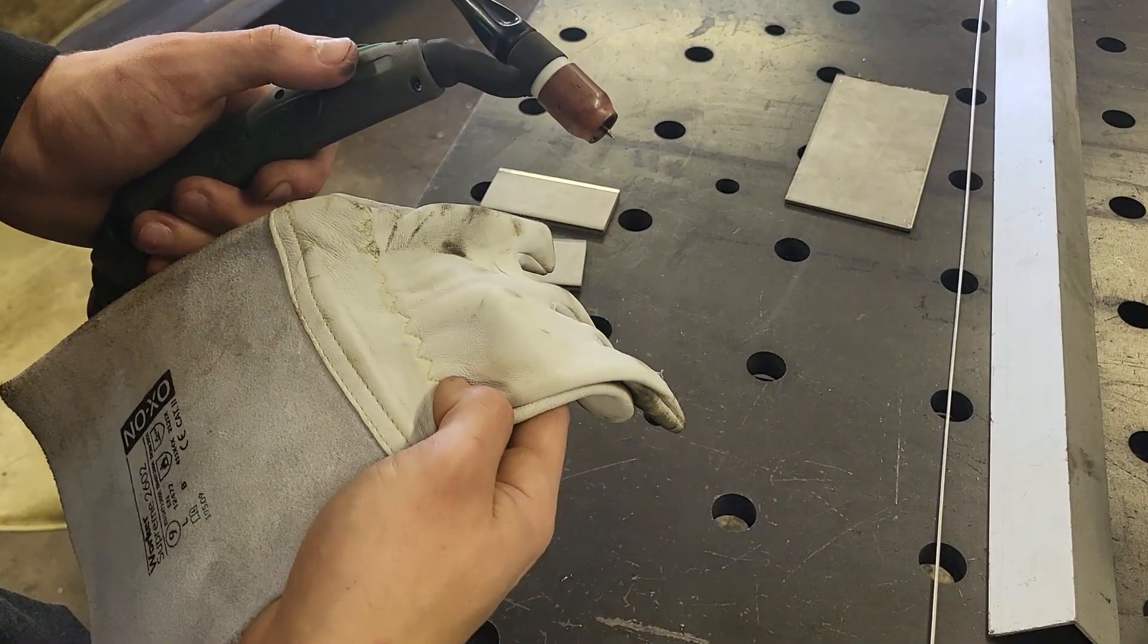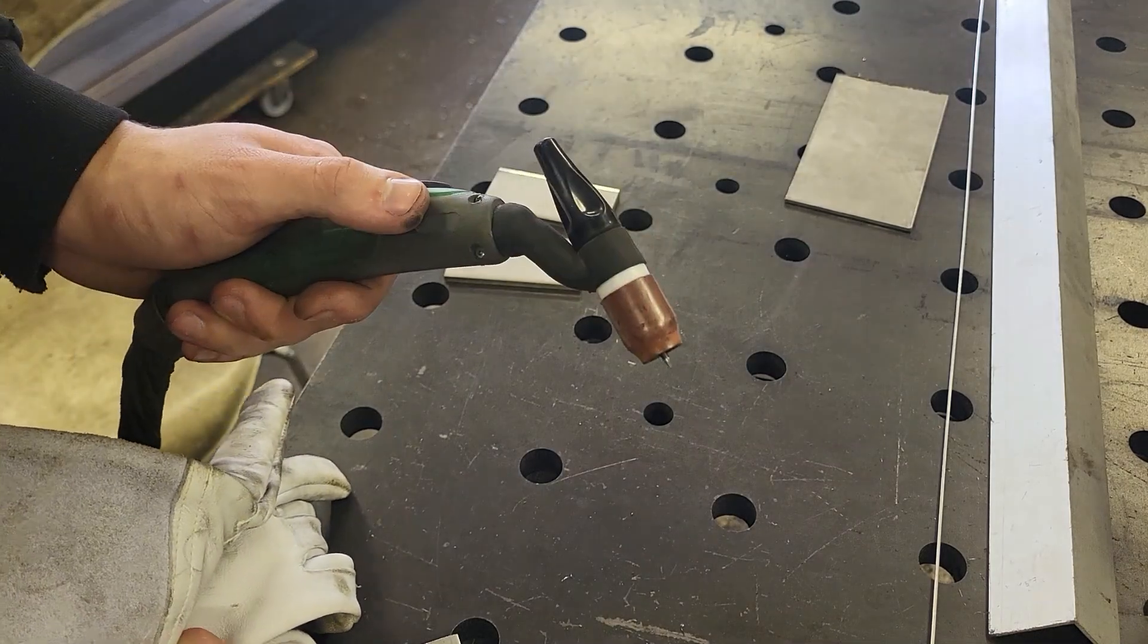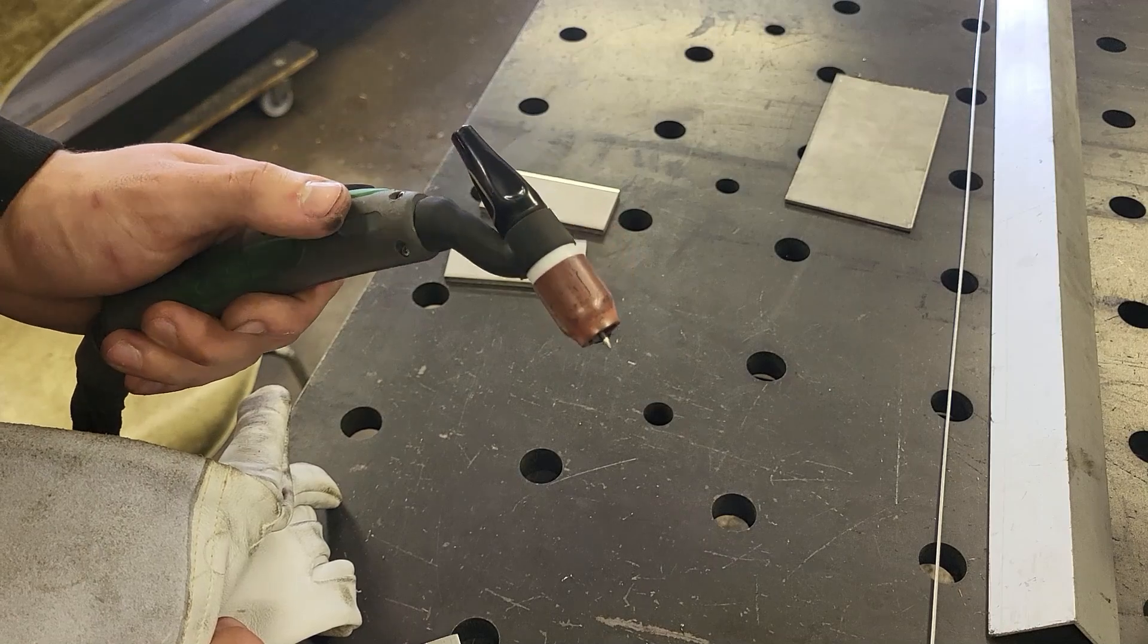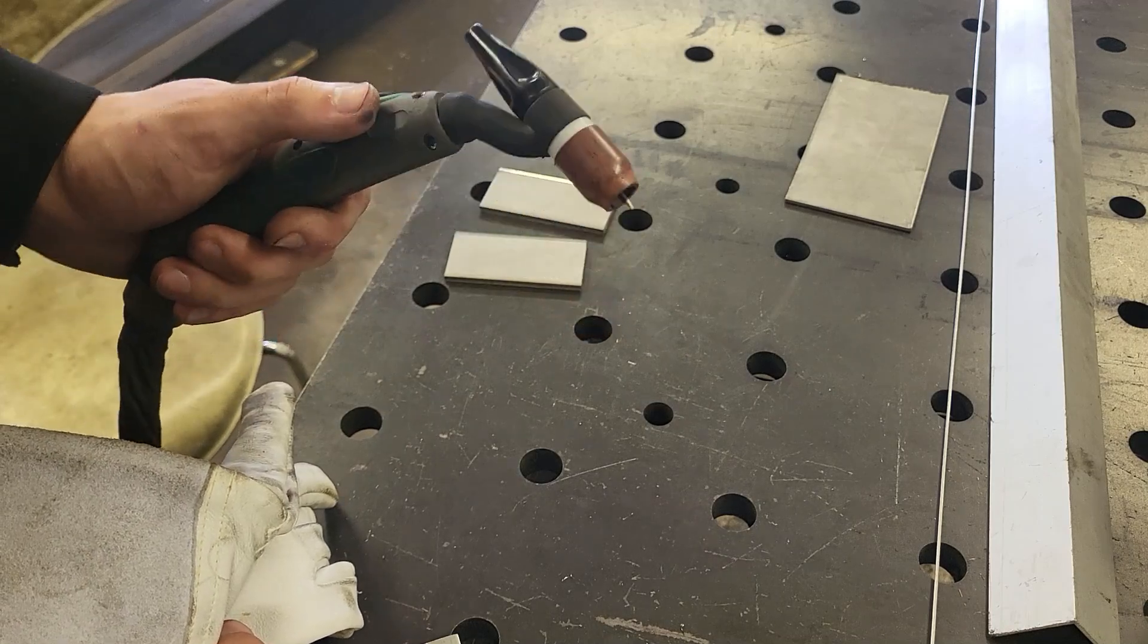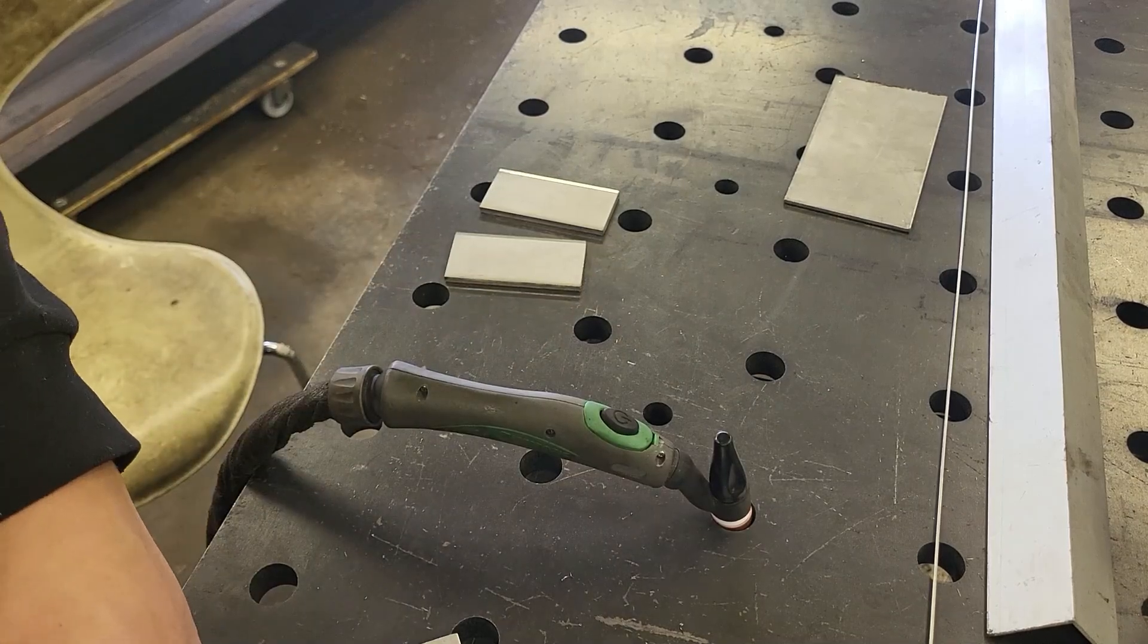When TIG welding, it's very important to cover all of your skin, because the electrical discharge creates UV light, which is quite harmful for your skin. And you also want to be in a ventilated area, because some of the fumes are not that healthy for you. Please consider your safety, and yeah, I think that's it.